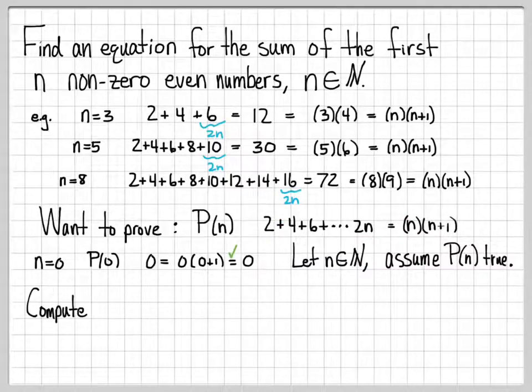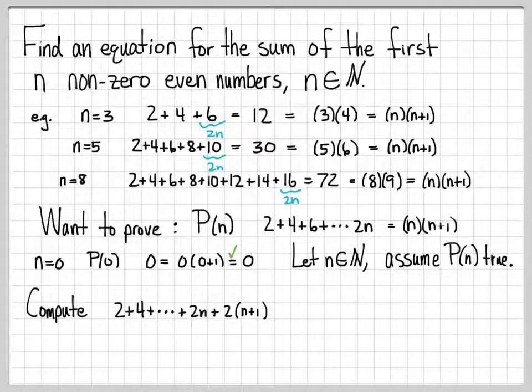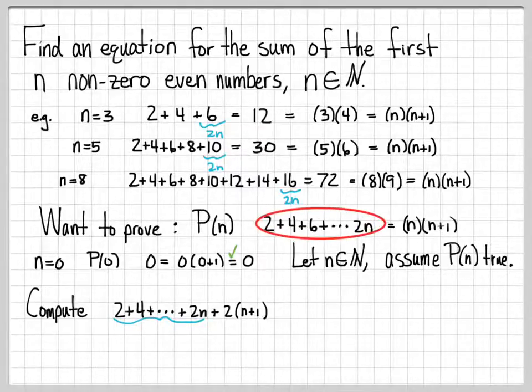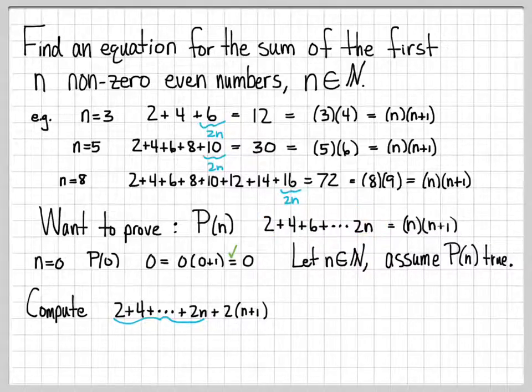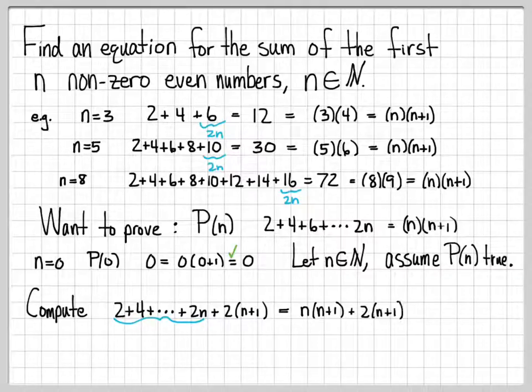Then I'm going to compute P of n plus 1. I'm going to write down my statement, but I'm going to go up one more number. Instead of stopping at n, I'm going to go up to n plus 1. Now I can use my assumption that P of n is true. I have P of n written down, essentially. So I can use this equality in this equation to rewrite this computation. I just substituted in what this quantity is equal to based on my assumption, plus 2 times n plus 1.